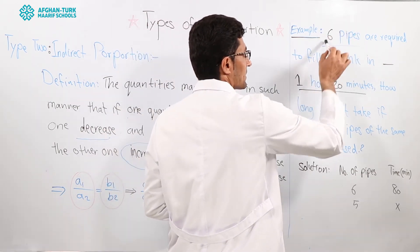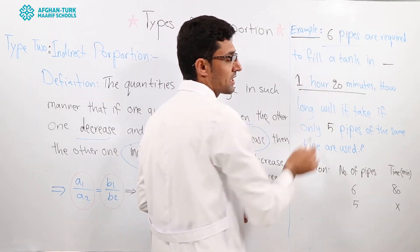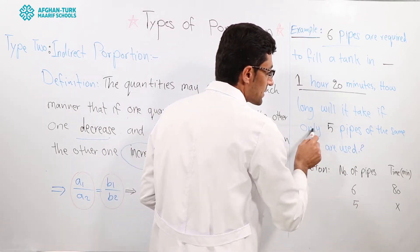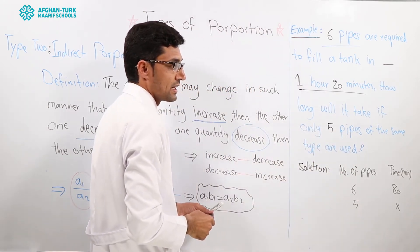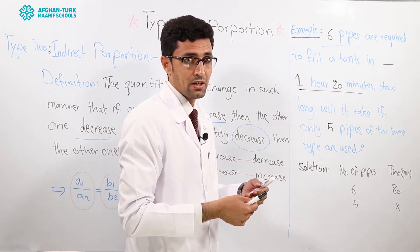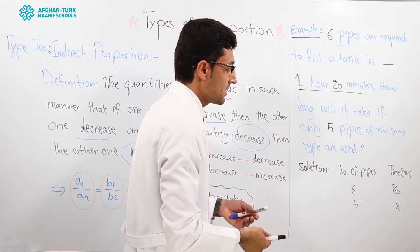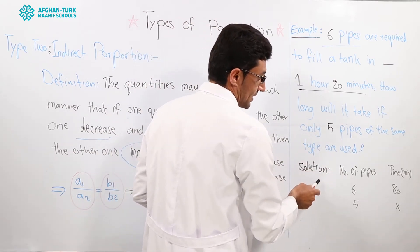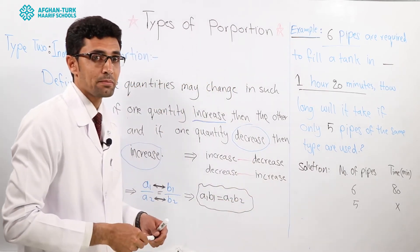If we use six pipes, we will finish it in 80 minutes. If we use five pipes of the same type, it means the size of pipes are equal, then how do we solve it? Is it an indirect proportion or no?